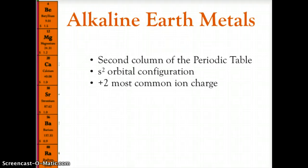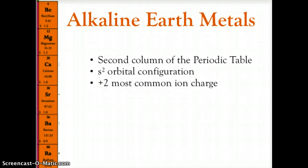The second column of the periodic table contains the alkaline earth metals. These have an S2 orbital configuration — an S block with two electrons in the outermost shell — and this column of elements typically takes on a plus two charge as their most common ion.